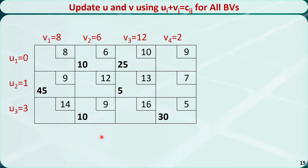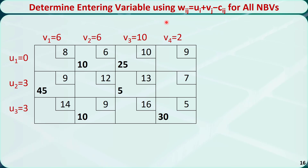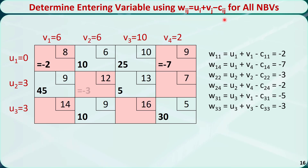In order to determine if this new basic feasible solution is optimal, we need to update u's and v's. We identify all the non-basic variables and mark them in red. For each non-basic variable, we calculate wij. Now, all the wij are less than or equal to 0, so this is an optimal solution. We will stop here.